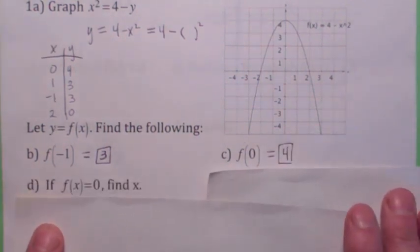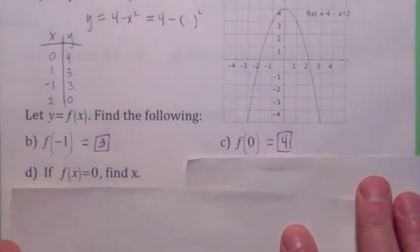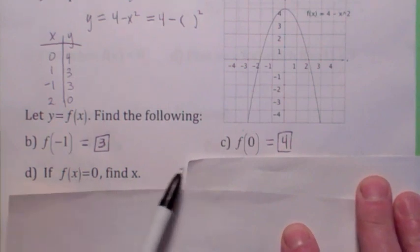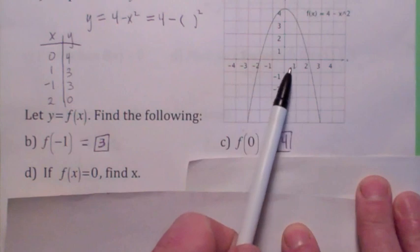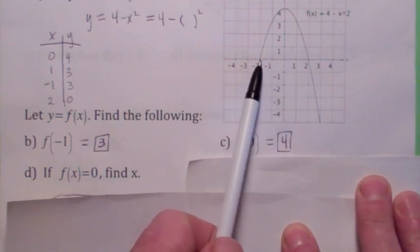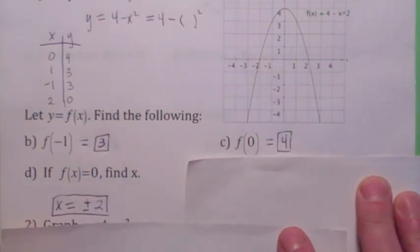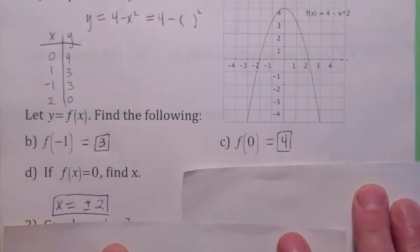Now, don't get that confused with this. I almost did earlier. This says if f of x equals 0, find x. Now, remember what f of x is? That's y. So, we're asking if the y-coordinate is 0, what is the x value? And notice there's two x values. x could equal 2, or x could equal negative 2.